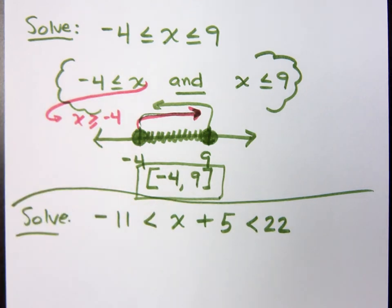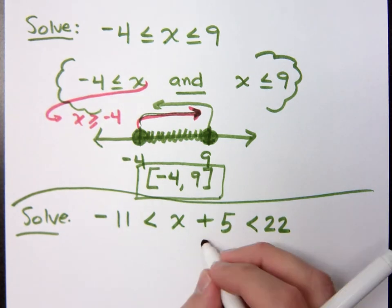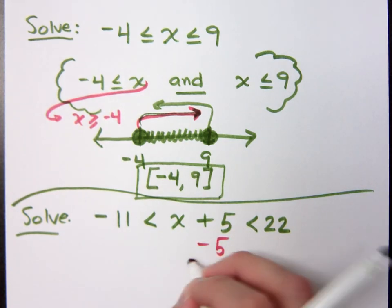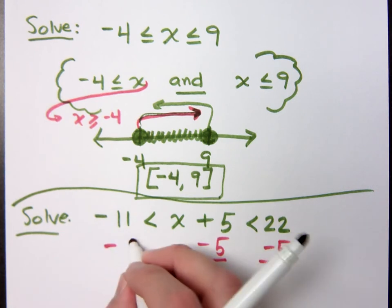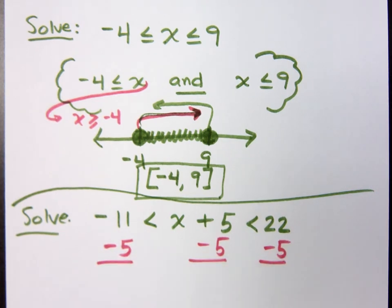So what I'm going to be able to do here is that what I do to one part of the inequality, I do to all three parts of the inequality. So you're saying I can subtract 5 here? That also means I have to subtract 5 on the other parts as well, otherwise the inequality may not remain true.